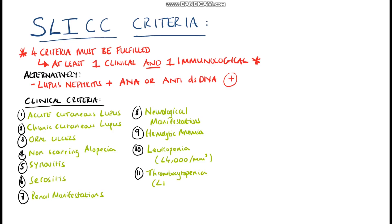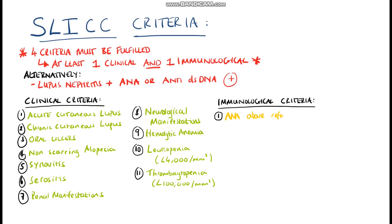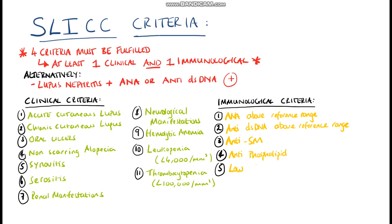The immunological criteria include anti-nuclear antibodies above the laboratory reference range, anti-double-stranded DNA above the laboratory reference range, anti-Smith antibodies, anti-phospholipid antibodies, low complement, or a direct Coombs test in the absence of hemolytic anemia.